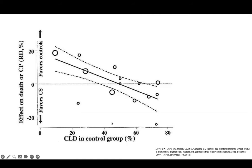An important graph illustrates when to give steroids in the evolving phase. The x-axis shows the baby's risk of developing BPD; the y-axis shows whether giving steroids will prevent or increase death and cerebral palsy. The cutoff appears to be at around 50%: if the risk of BPD is more than 50%, giving steroids is likely to benefit the patient by decreasing BPD risk, death, and CP. If the risk is less than 50%, giving steroids may actually increase the risk of death or cerebral palsy. So low-dose dexamethasone — and in some cases high-dose — is appropriate when BPD risk is 50% or more.